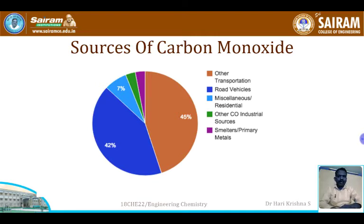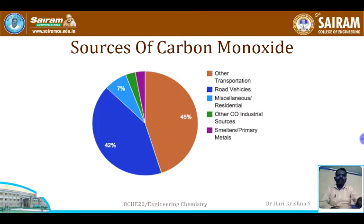What are the main sources of carbon monoxide? According to a recent study, 42 percent of carbon monoxide is produced by road vehicles — buses, lorries, two-wheelers, four-wheelers, and cars. Road transport, including public transport such as buses and private vehicles, accounts for 42 percent of CO emissions.